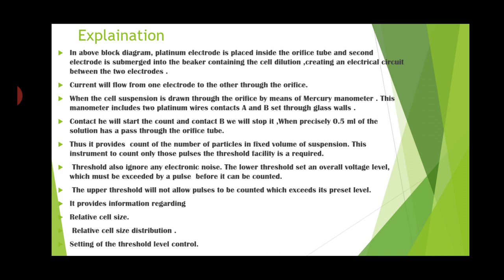To count only those pulses, a threshold facility is required. The threshold also ignores any electronic noise. The lower threshold sets the overall voltage level which must be exceeded by a pulse before it can be counted. The upper threshold will not allow pulses to be counted which exceed the preset level. It provides information regarding relative cell size distribution and the setting of the threshold level control.